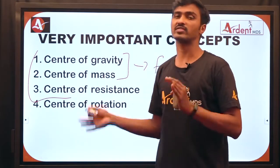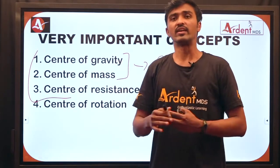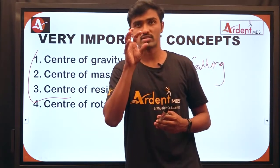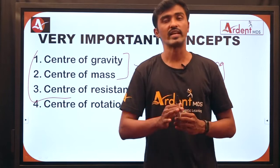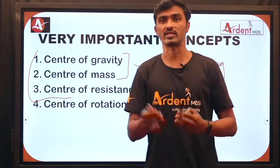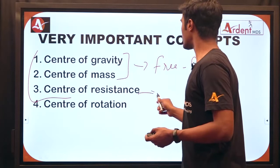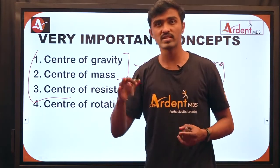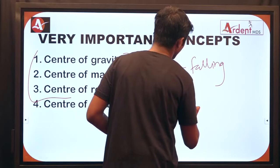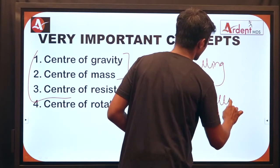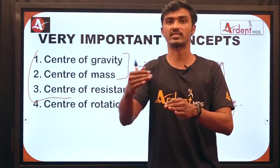The difference between these three concepts: center of gravity applies to a free-falling object under the influence of Earth's gravity; center of mass applies to a free-falling object not under the influence of gravity. The center of resistance is the same concept applied to dentition, which has a point where the entire mass is concentrated, but teeth are not free-falling — they are constrained by surrounding periodontal structures. That is why the term center of resistance is used instead of center of gravity or mass.